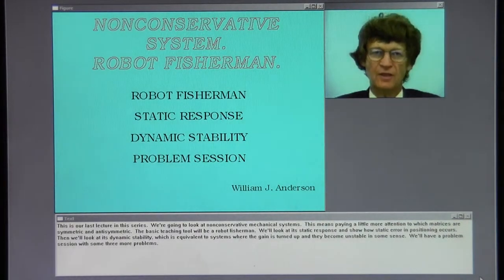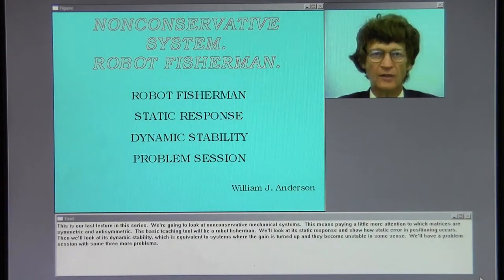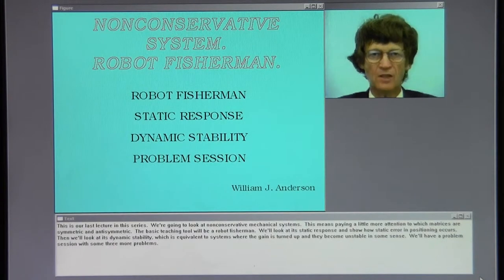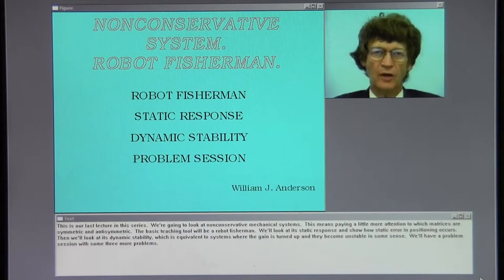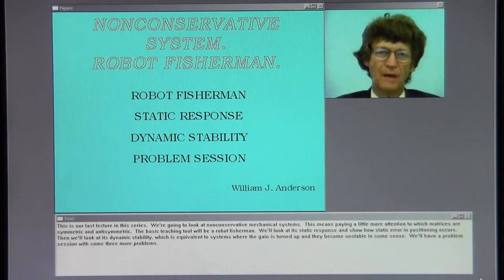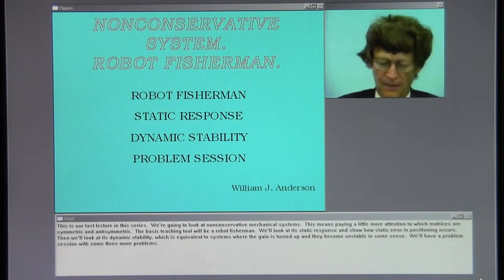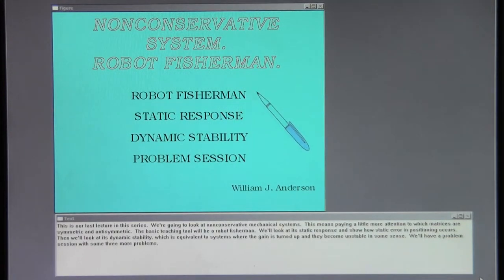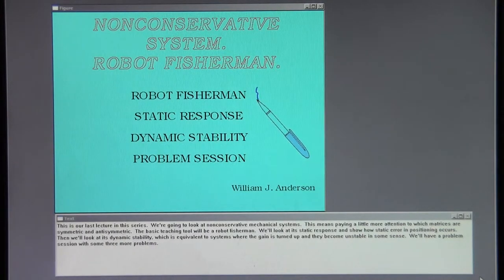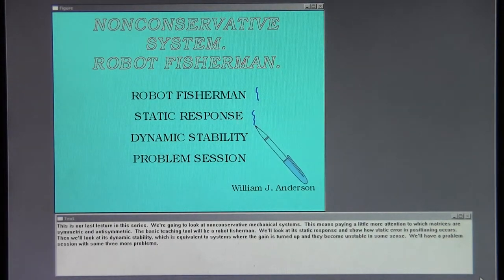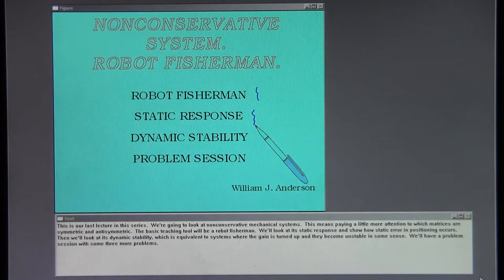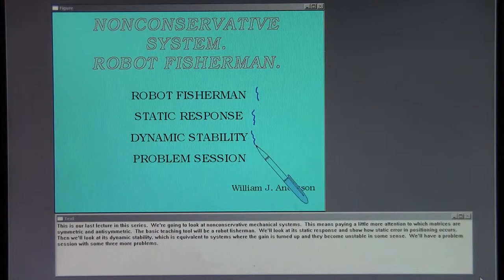This is our last lecture in this series. We're going to look at non-conservative mechanical systems. This means paying a little more attention to which matrices are symmetric and anti-symmetric. The basic teaching tool will be a robot fisherman. We'll look at its static response and show how static error in positioning occurs. Then we'll look at its dynamic stability, which is equivalent to systems where the gain is turned up and they become unstable in some sense.